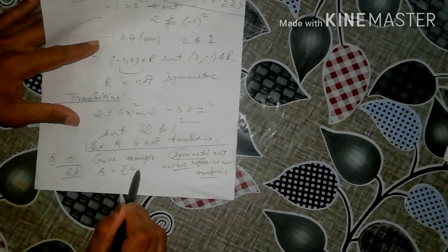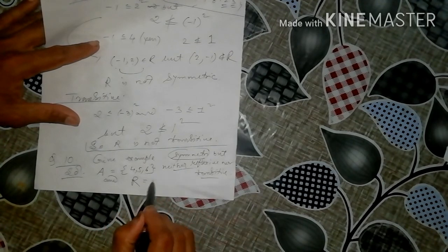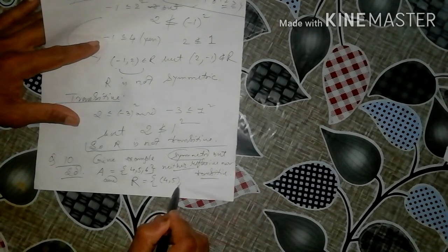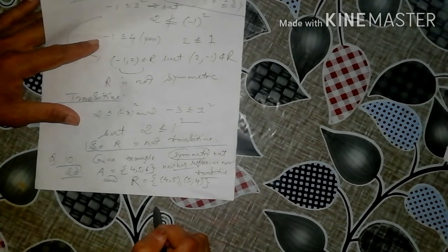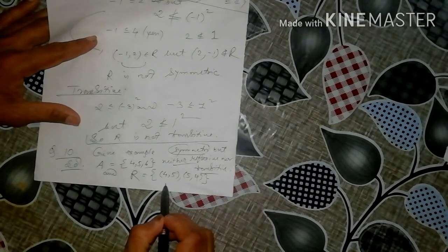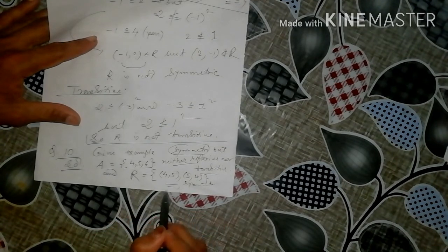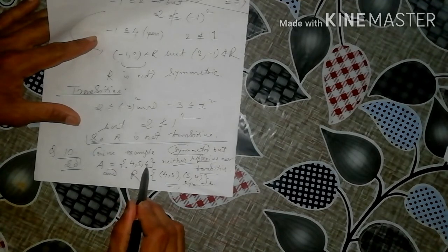Let A = {4, 5, 6}. Define a relation R = {(4,5), (5,4)}. You can see it is symmetric. But (4,4), (5,5), (6,6) are not in R, so it is not reflexive.